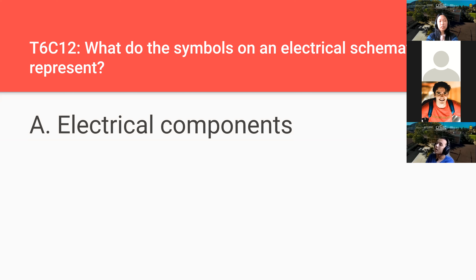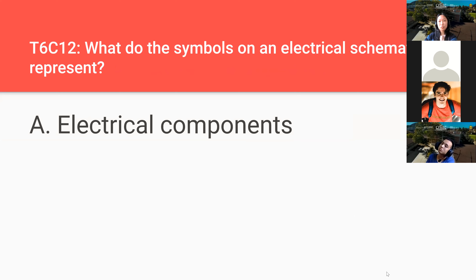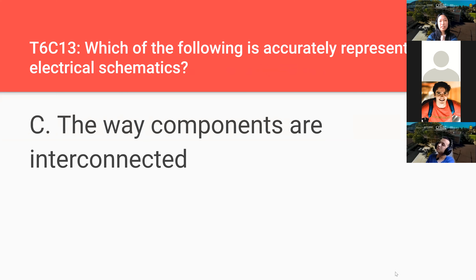What do the symbols on an electrical schematic represent? Electrical components — those symbols all represent electrical components. Which of the following is accurately represented in electrical schematics? The way that components are interconnected — how the battery connects to the resistor and so forth.